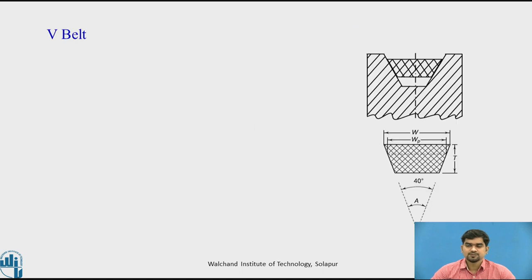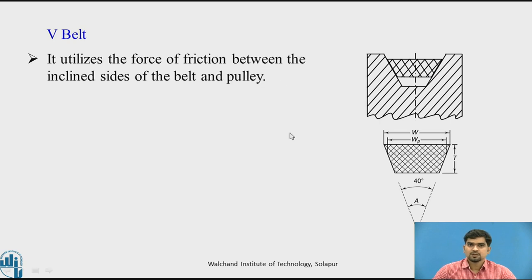This is a figure of the V-belt in which the belt is mounted on the pulley. This is a V-belt. Generally, the angle of the V-belt is 40 degrees. It utilizes the force of friction between the inclined side of the belt and the pulley, so friction occurs between the pulley and the belt. Because of that friction, the transmission of power takes place.